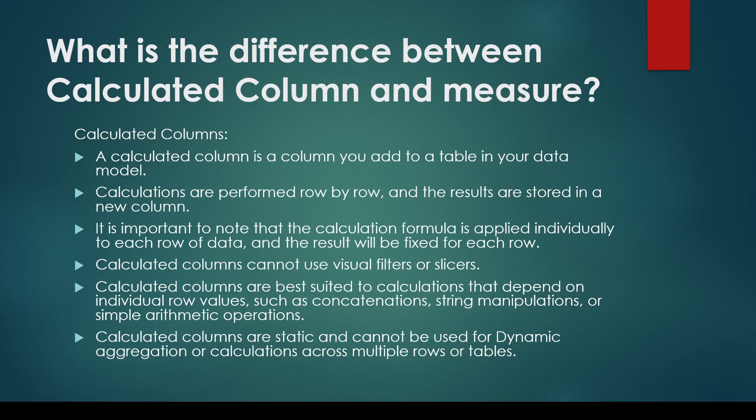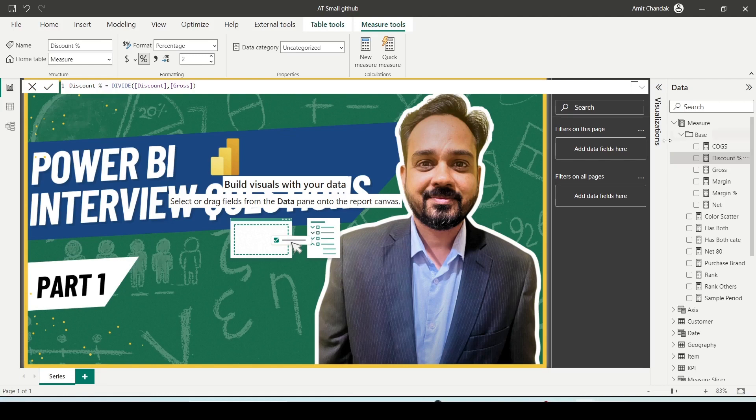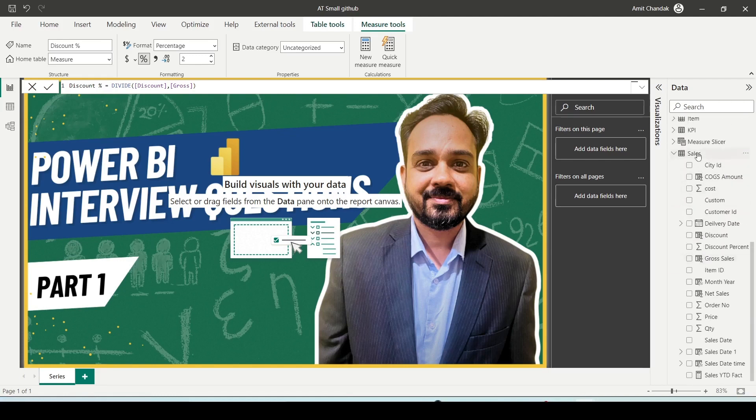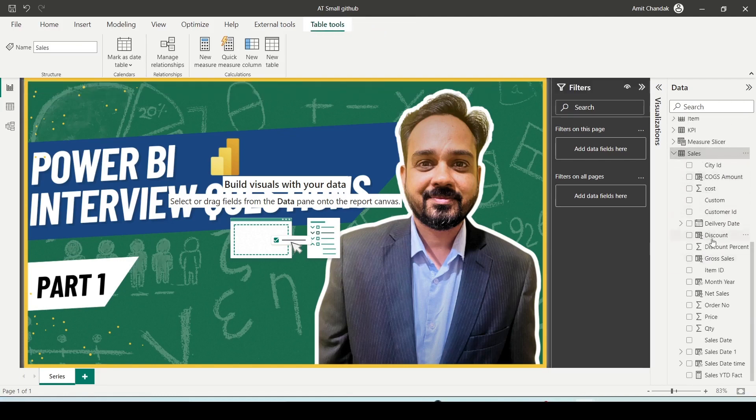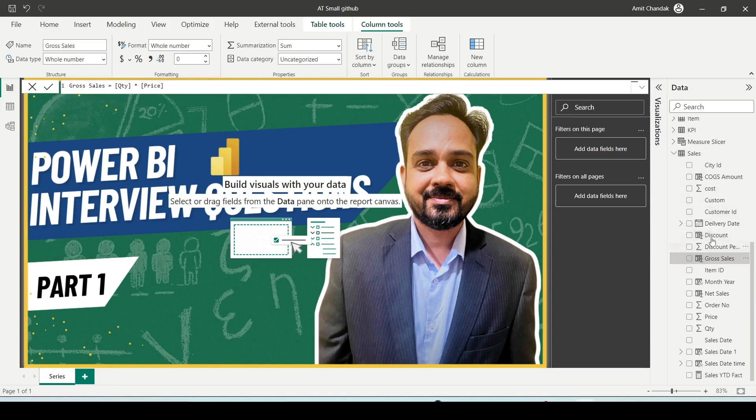Let me show you in Power BI so you can understand the difference. If I go to Power BI, you'll see I have a table here. In the table I have these formulas - these are my calculated columns with the sigma symbol.